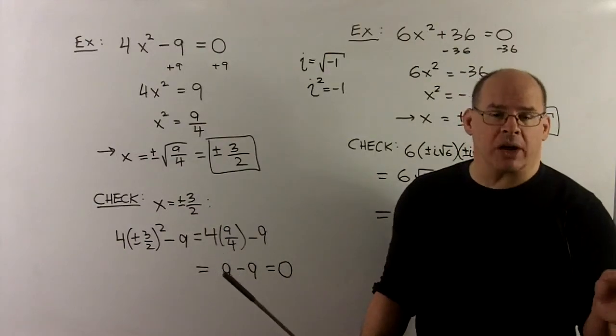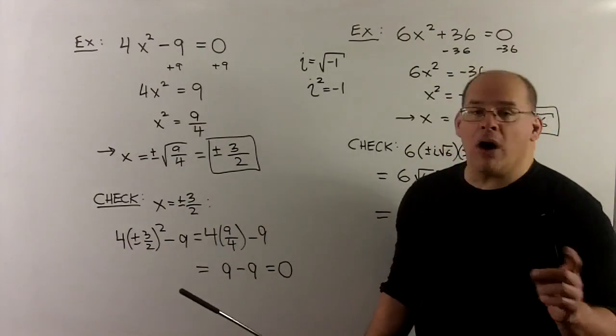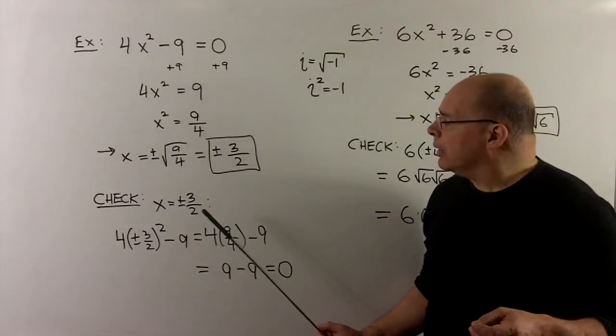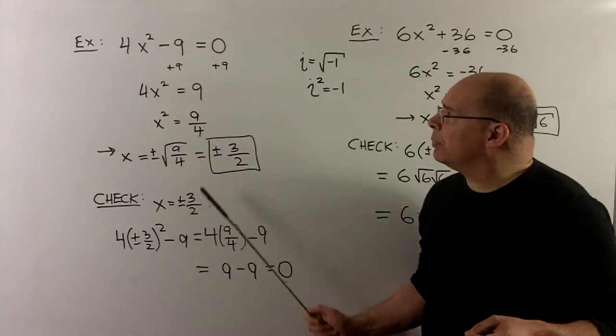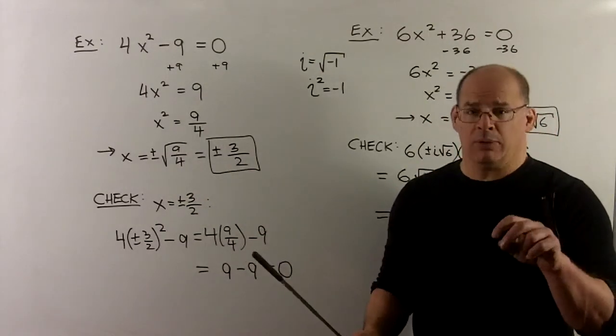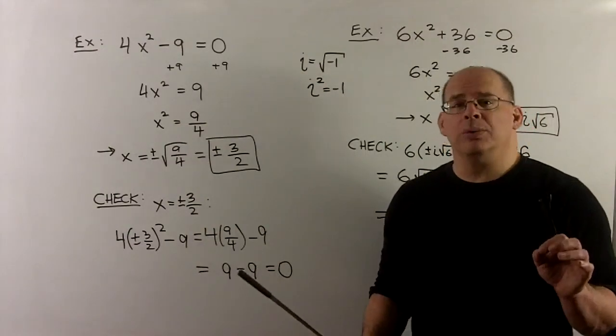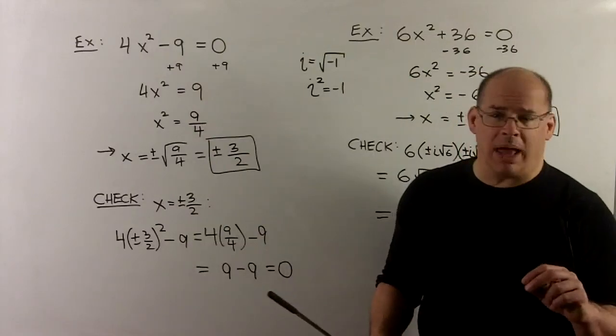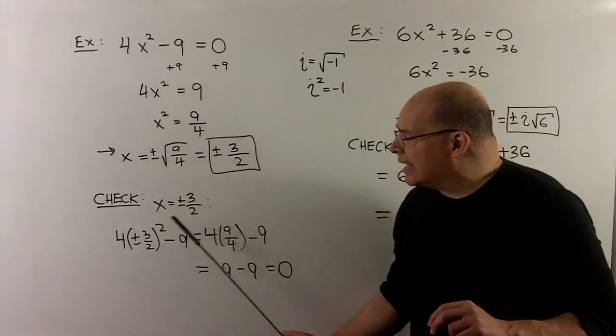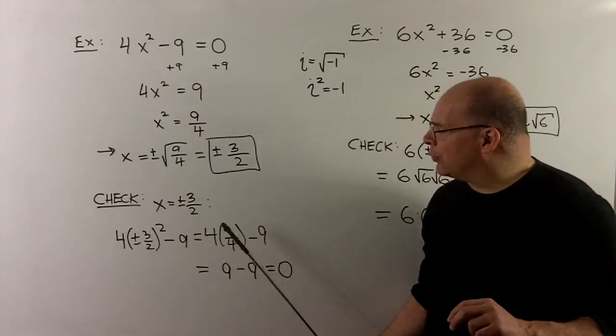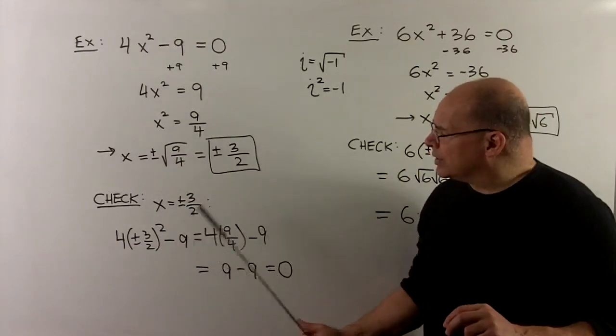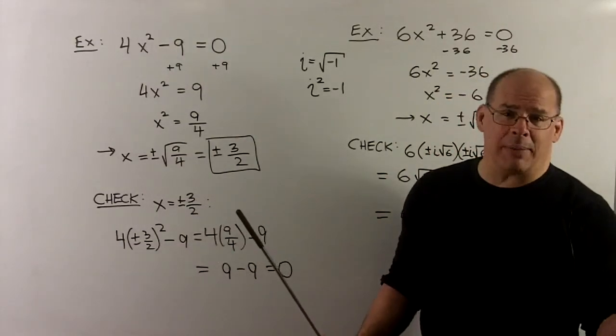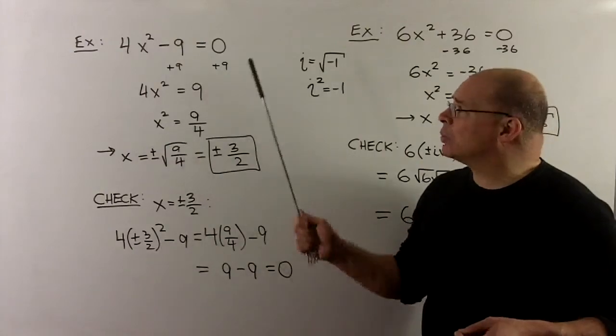Of course, we check our work. And often we can check both solutions at the same time. If I take plus minus 3 over 2 and put it in the square, for both they're going to go to 9 over 4. The minus goes away. They both go to a plus. That gives us 4 times 9 over 4 minus 9. 4 times 9 over 4 is 9. So 9 minus 9 goes to 0. And that's what we were looking for.